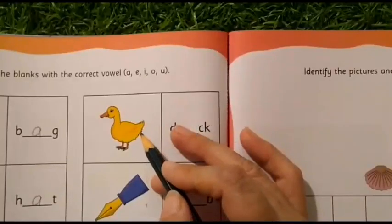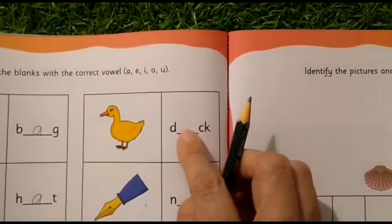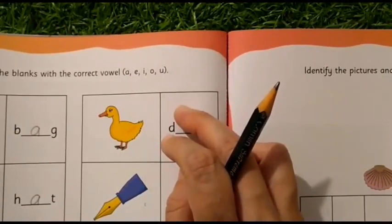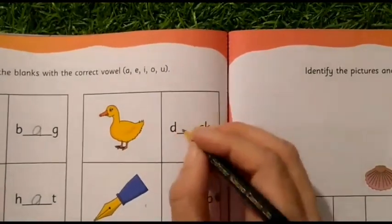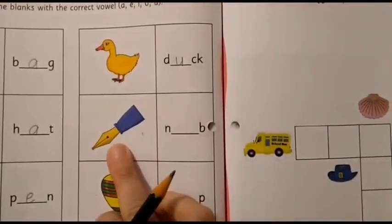What can you see here? This is a duck. So, D is given. K is given. So, which letter will come here? Which letter says Ah? Duck. Ah. U. So, which vowel? U. Very good. Let us move on to the next one.